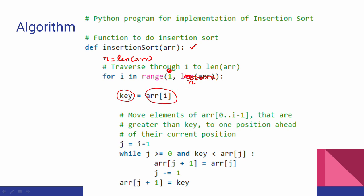Array of i is the current element. j starts at i-1. While j is greater than or equal to 0 and the key is less than array of j, we shift: array of j+1 equals array of j, then decrement j. This creates an empty space.